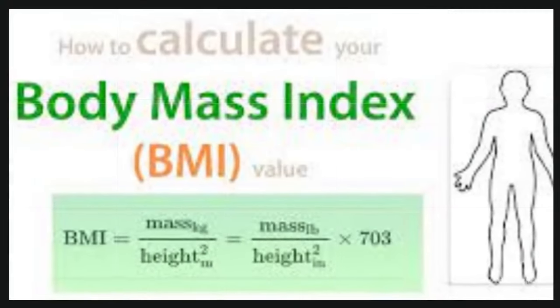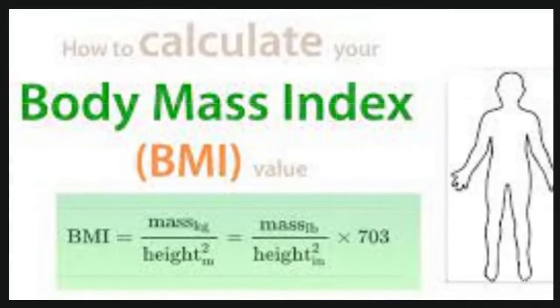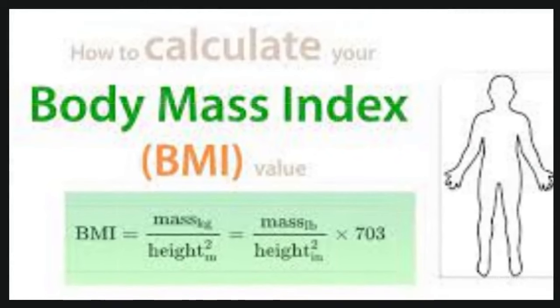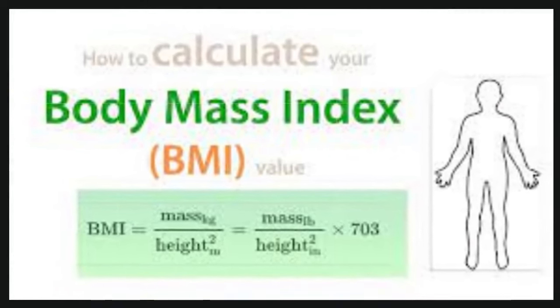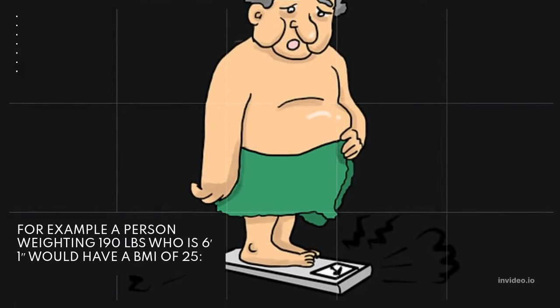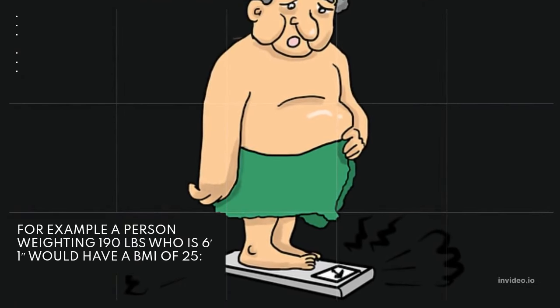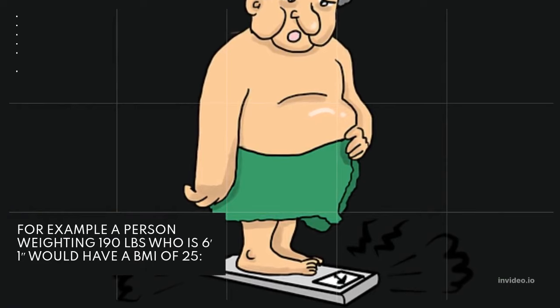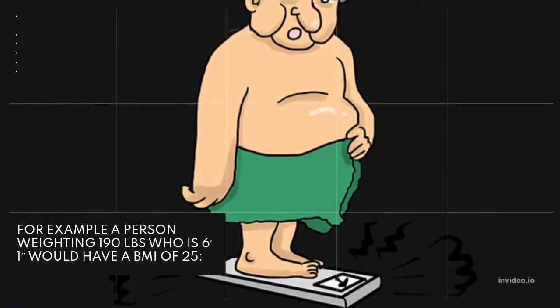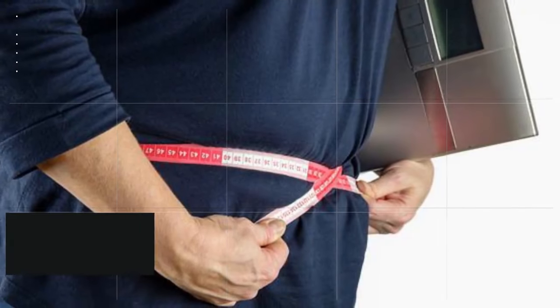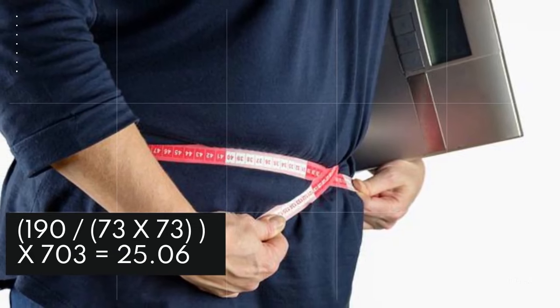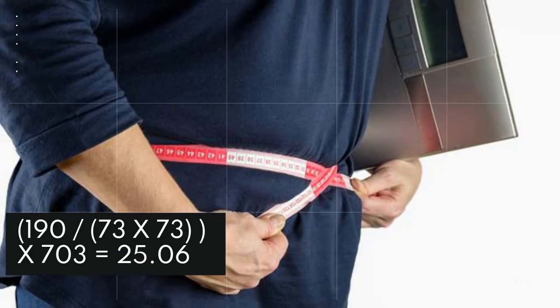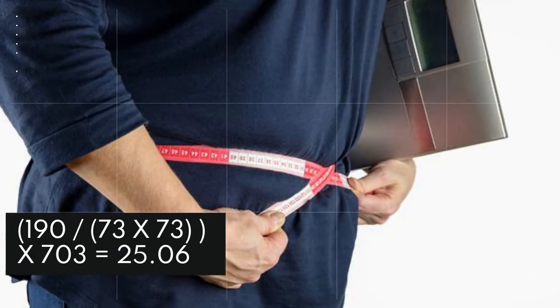To calculate the BMI score using imperial measures, divide the weight in pounds by the height in inches squared, then multiply by 703. For example, a person weighing 190 pounds who is 6 feet 1 inch would have a BMI of 25. That is: 190 divided by 73 by 73, then multiplied by 703, equals 25.06.